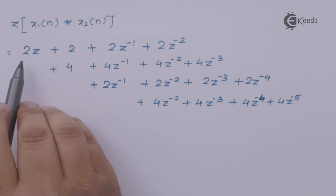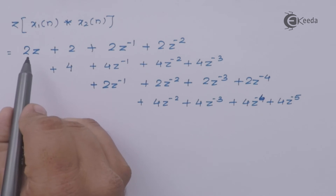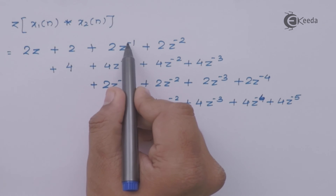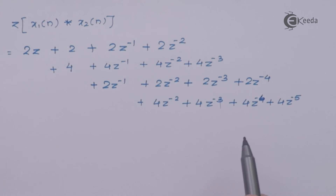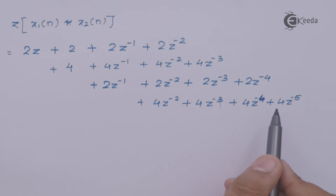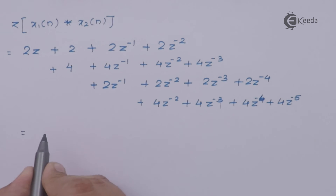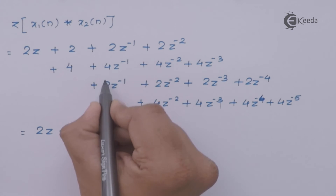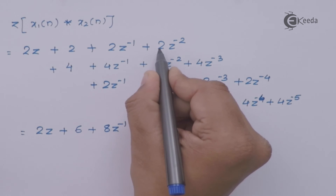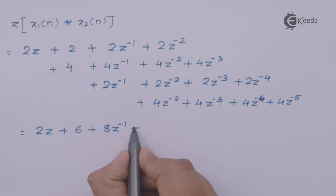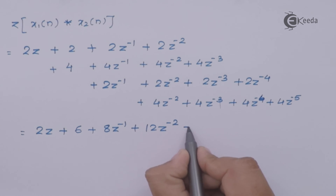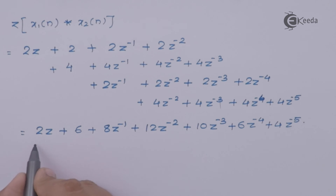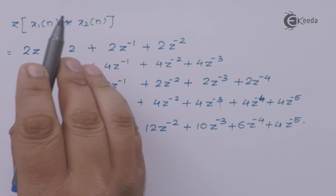Grouping all terms by their power of Z: the Z to the power 1 term gives 2Z; Z to the power 0 terms: 4 plus 2 gives 6; Z to the minus 1 terms: 4 plus 4 gives 8Z inverse; Z to the minus 2 terms: 4 plus 6 gives 12Z to the minus 2; Z to the minus 3 terms: 4 plus 4 plus 2 gives 10Z to the minus 3; Z to the minus 4 terms sum to 6Z to the minus 4; and the last term follows. This is the Z-transform of the convolution of the two sequences.